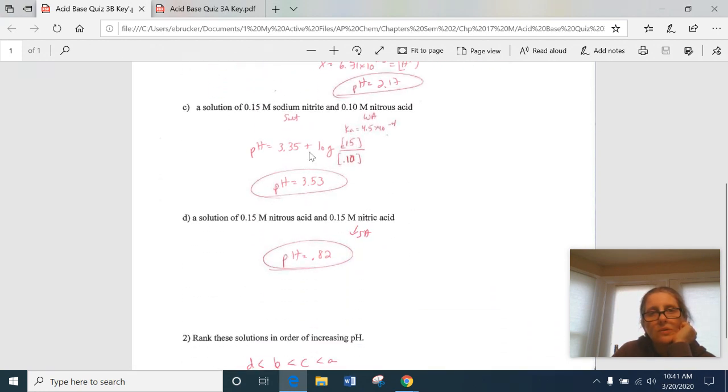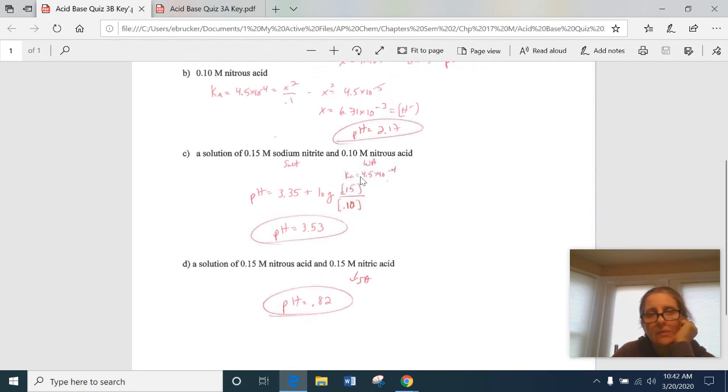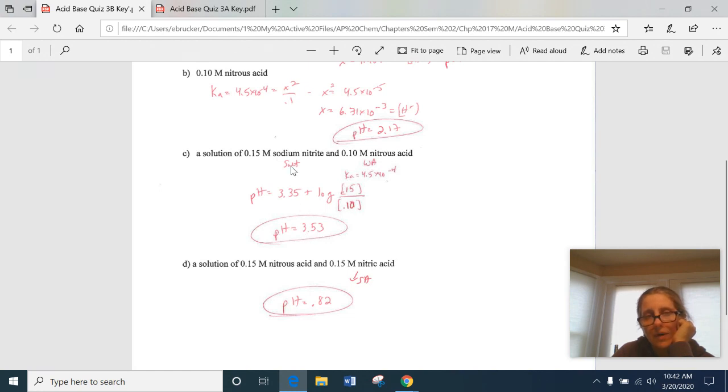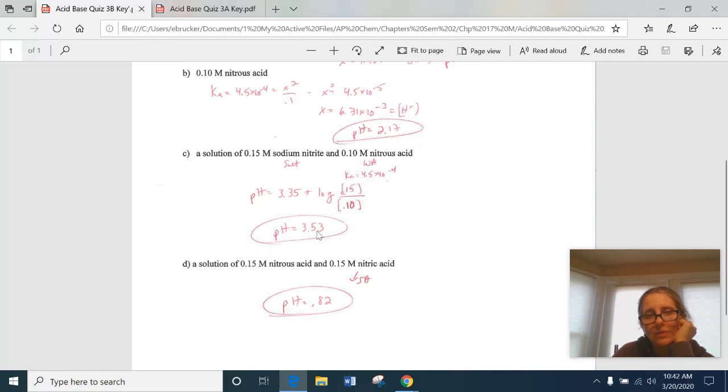Letter C on this quiz was sodium nitrite and nitrous acid. This was the salt, this was your weak acid. You look up your weak acid. That's your Ka here. So I take the negative log of that to get 3.35. My log of my salt concentration goes on top, which is 0.15. My acid goes on the bottom, and I end up with 3.53. Same kind of rationale. Now, the nitrite is acting like a base, so that pH should get a little bit bigger, that bigger number over a smaller number.